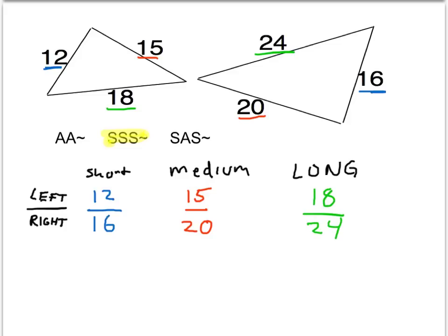So are these three fractions equal to each other? That's the question. If you take 12 divided by 16, that fraction simplifies to 3 fourths. 15 divided by 20, that fraction also simplifies to 3 fourths. And 18 divided by 24 — both top and bottom are divisible by 6 — and so that also simplifies to 3 fourths. That means that these ratios are indeed equal, and so all the sides are proportional. So we've just proven that these two triangles are indeed similar by SSS similarity.